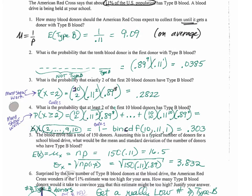Number 2 is one where it identifies exactly where the type B donor happens. What's the probability that the first type B donor is in the 10th spot? It's telling you the order, such that the first 9 are not type B and the last one — the 10th one — is. So this one is type B, then you multiply those out.